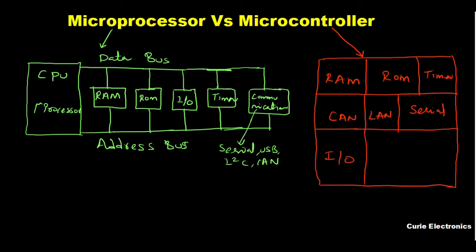Importantly, a microcontroller also has I/O ports, PWM, and ADC — all integrated using a single chip. This is the main difference between a microcontroller and a microprocessor.